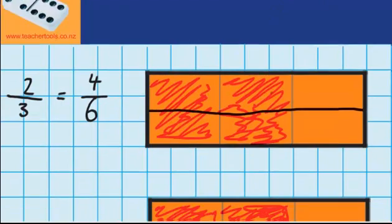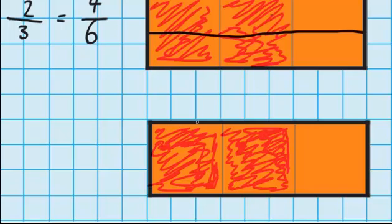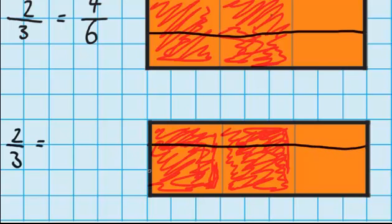If I go down a little bit further, you can see I've got that two thirds again, so I'll write that in over here — two thirds. But this time I want to see if I can change it into ninths. The easiest way to do that is to draw a line along here and another line along there. You can see that I've now split it into ninths, so I'll write in my denominator, which is nine.